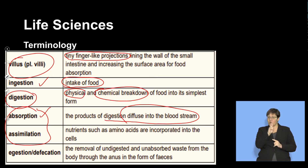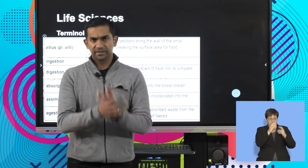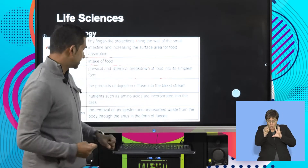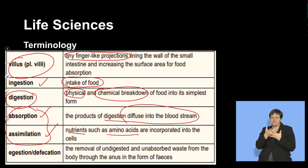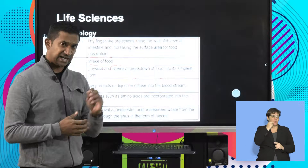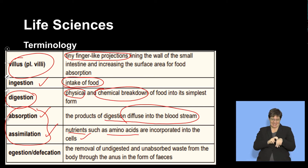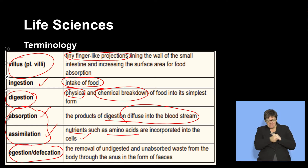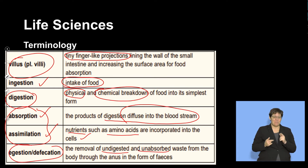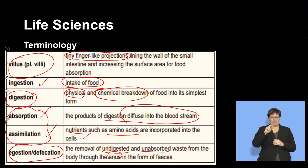Assimilation essentially means to put together. Once nutrients such as amino acids, simple glucose molecules, fatty acids, and glycerol are absorbed, they are put together into what the body and cells need. Finally, undigested and unabsorbed products are removed from the body through the external opening in the form of feces — that is ejection.